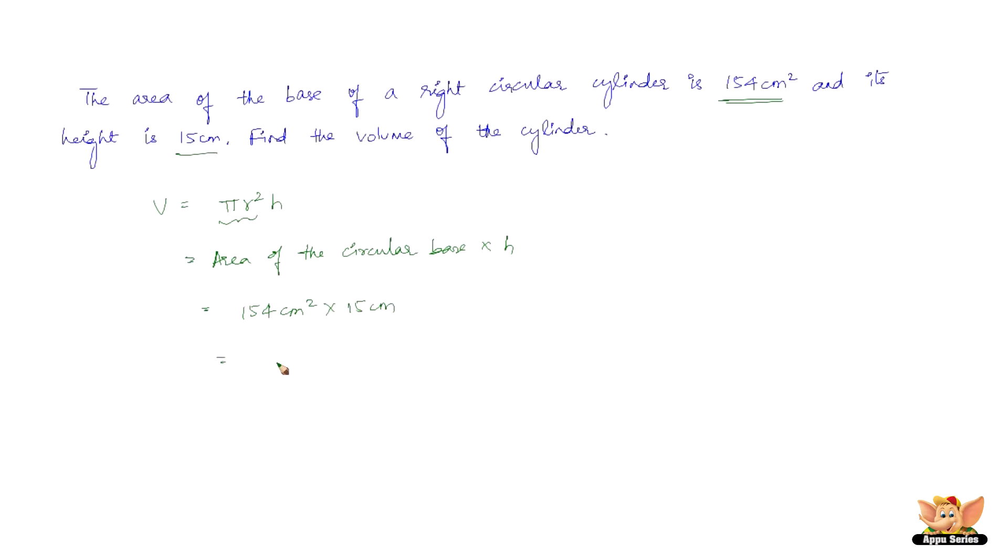So that is nothing but 2310 cm³. The volume of the given right circular cylinder is 2310 cm³.